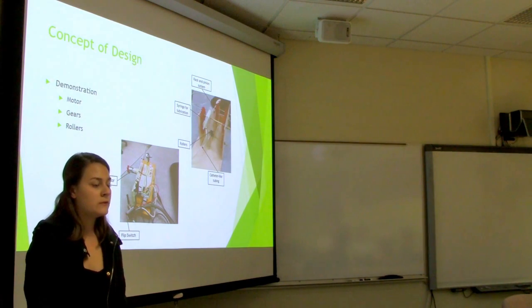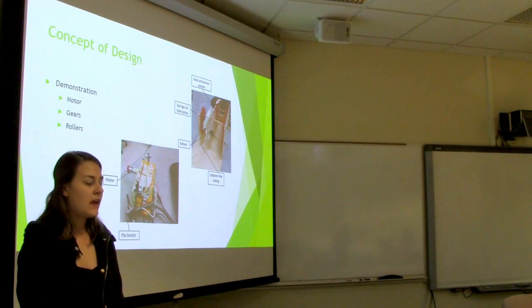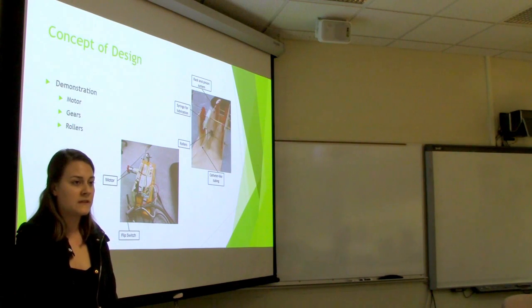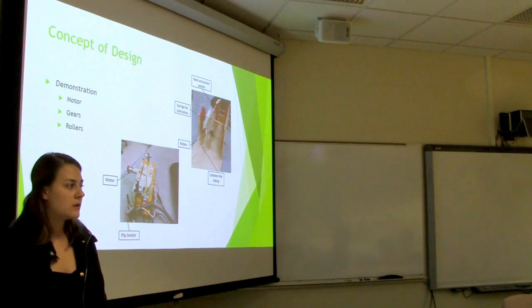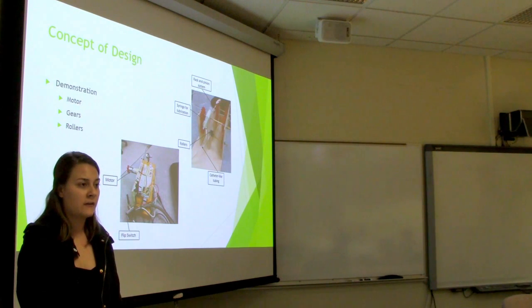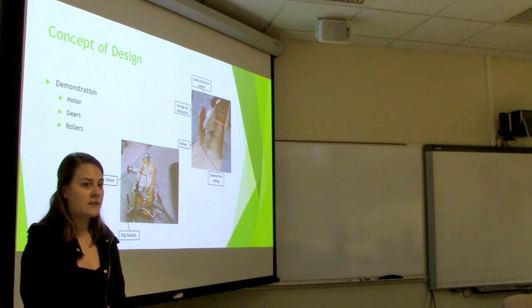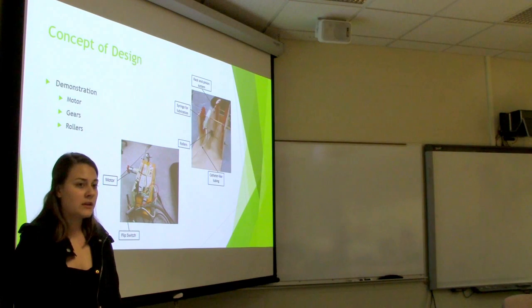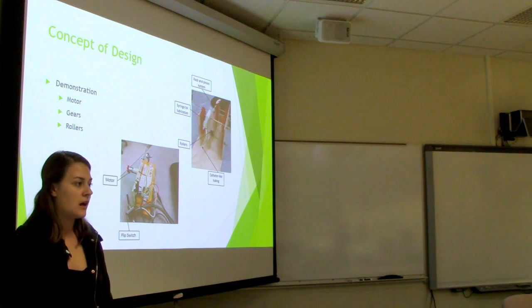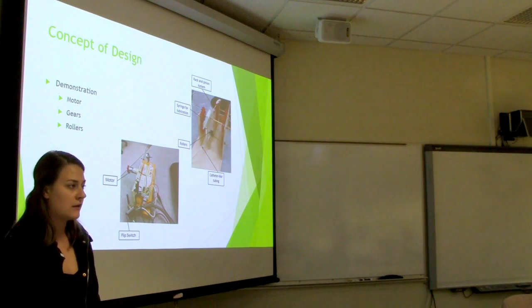From there, a gear train reduced the speed from the motor to what I thought was an acceptable feed speed for the catheter. And the catheter was pulled forward and backward using two rollers that moved at the same speed but in opposite directions. There's also a lubrication system included in the device because a catheter needs to be lubricated to go into the body comfortably. And I showed that in the demonstration using a rack and pinion system and a syringe. So as the rack is pushed forward by the pinion, the plunger of the syringe is pushed forward, expelling lubrication onto the catheter, making it ready for insertion as it comes out of the device.